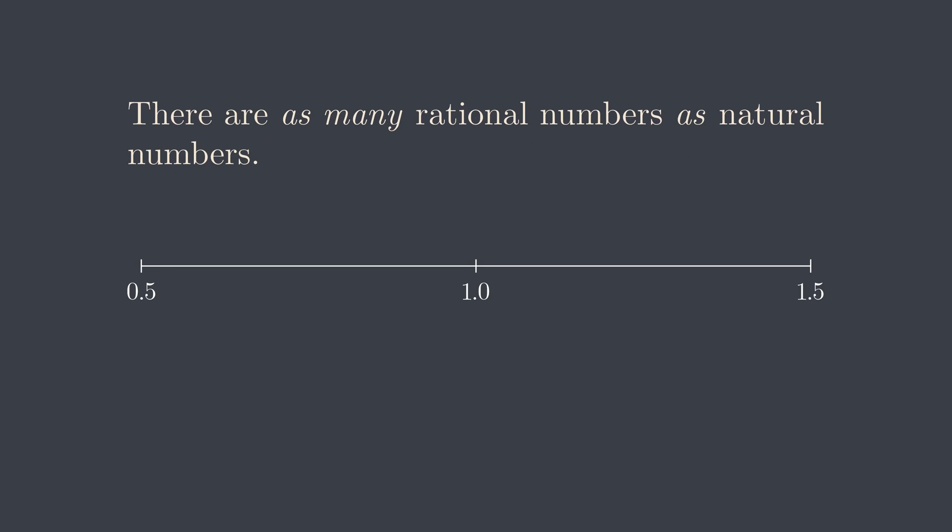I really really like this result, because the countable infinity of natural numbers is understandable, because you go to infinity. But for rational numbers, it means I can squeeze countably infinite many numbers into a finite interval. That is crazy.